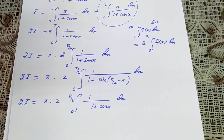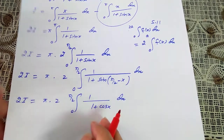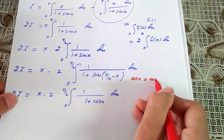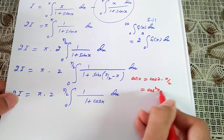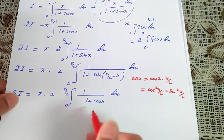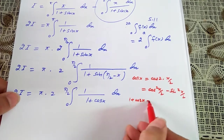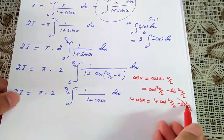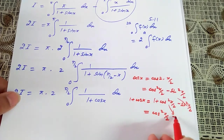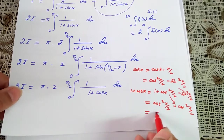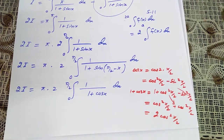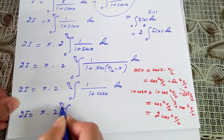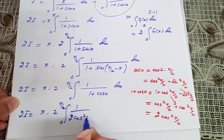Now cos of x can be opened using the identity: cos x equals cos(2 · x/2) equals cos²(x/2) minus sin²(x/2). So 1 plus cos of x becomes 1 plus cos²(x/2) minus sin²(x/2). Since 1 minus sin²(x/2) equals cos²(x/2), this gives us 1 plus cos of x equals 2 cos²(x/2). Therefore 2i equals π times 2 times the integral from 0 to π/2 of 1 over 2 cos²(x/2) dx.